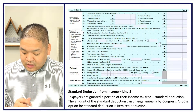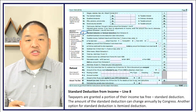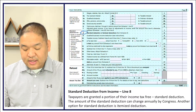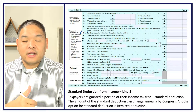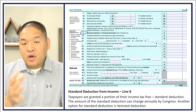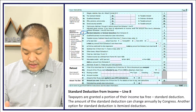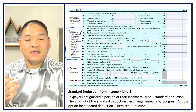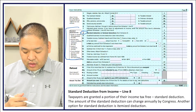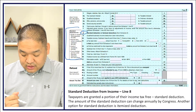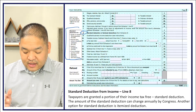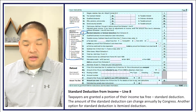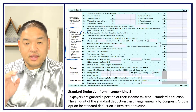Line 8 is the standard deduction. The government gives every taxpayer an allowance that is not taxable — that's the standard deduction. You can either take the standard deduction or itemize, whichever is greater. Most taxpayers take the standard deduction. For single or married filing separately, it's $12,000; married filing jointly or qualifying widower is $24,000; head of household is $18,000. If your itemized deductions are greater, you'd enter that number instead.